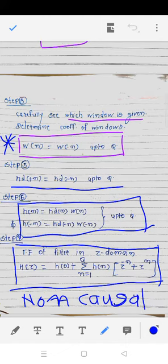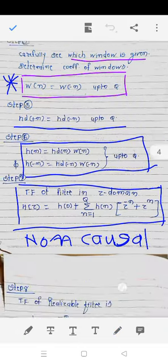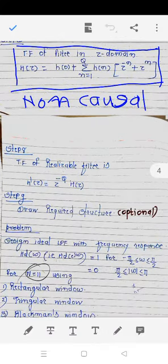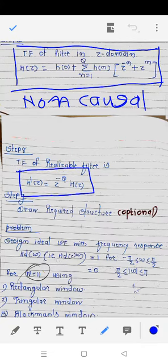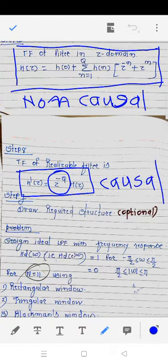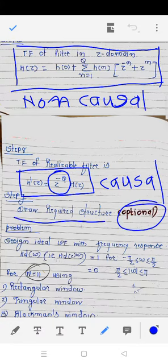A non-causal system anticipates the future and is not realizable in practice. To remove this non-causal nature, we multiply the transfer function by z^(−q) to obtain the realizable filter H'(z). Because of this z^(−q) multiplication, the system becomes causal. Drawing the required structure is an optional final step.